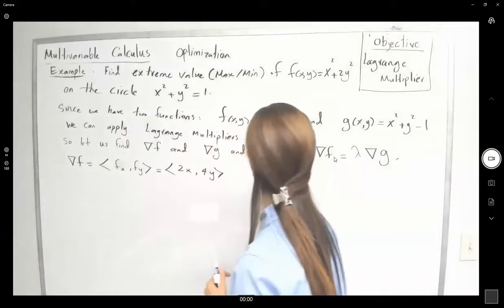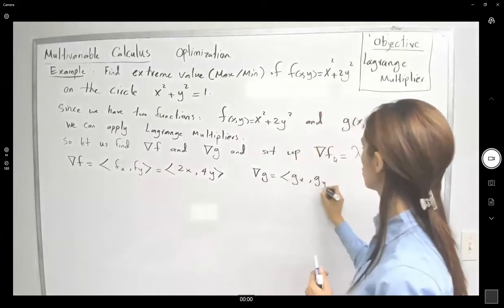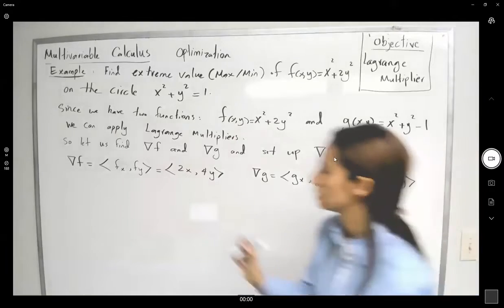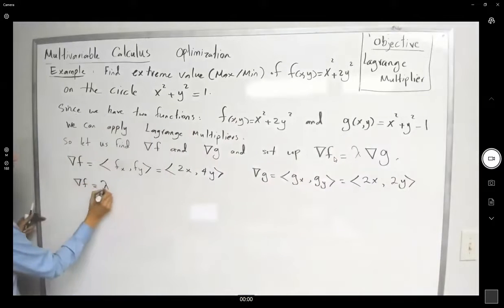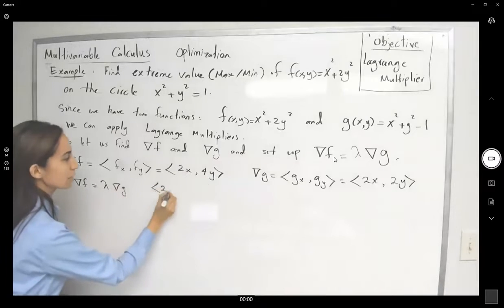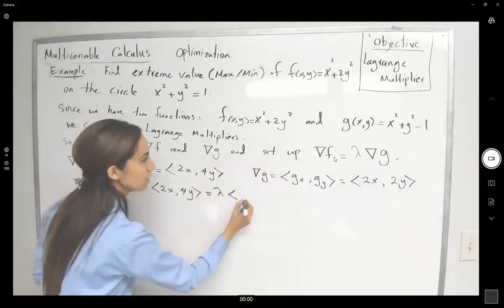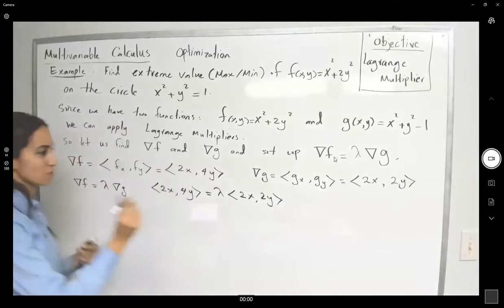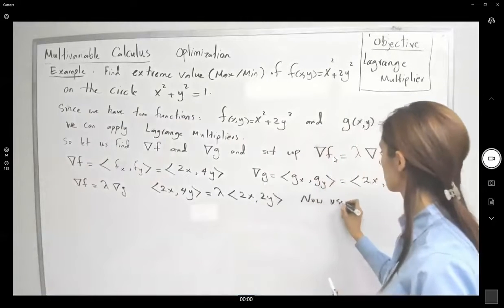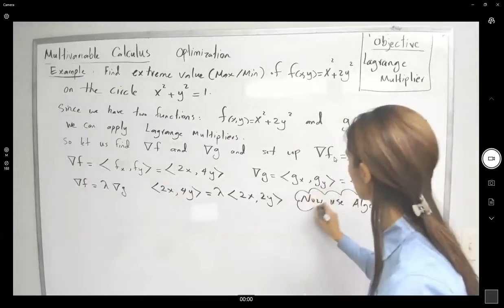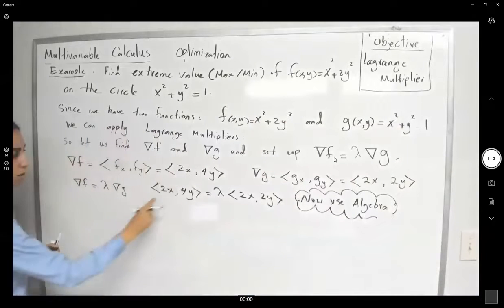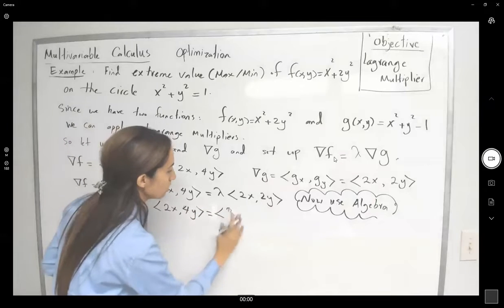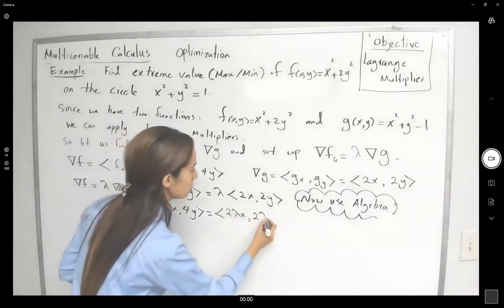The gradient of g equals (g_x, g_y) = (2x, 2y). The gradient of f must equal λ times the gradient of g, so (2x, 4y) = λ(2x, 2y). The rest is algebra.